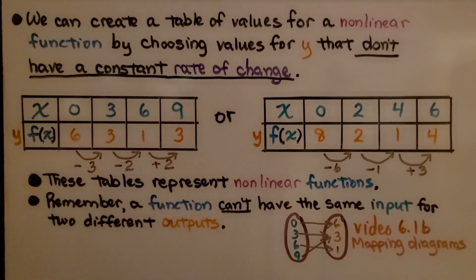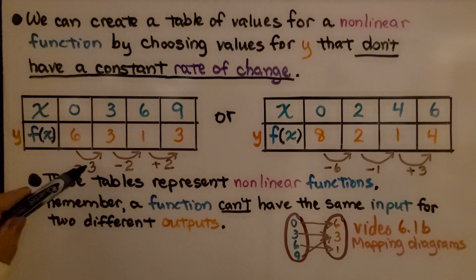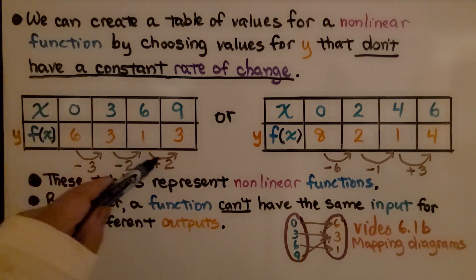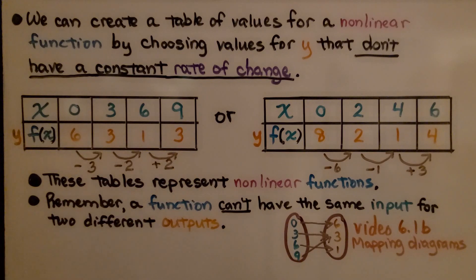Zero, three, six, nine. But look at the y values, the f of x. It's going from six down to three, so we have a minus three. Then it's going down to one, which is a minus two. Then it's going back up again, that's a plus two.